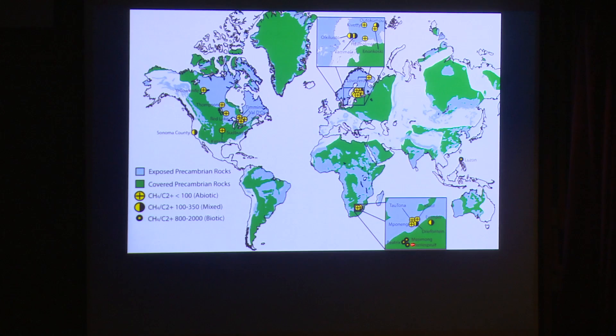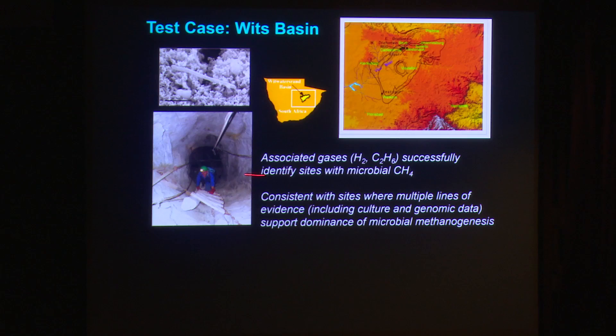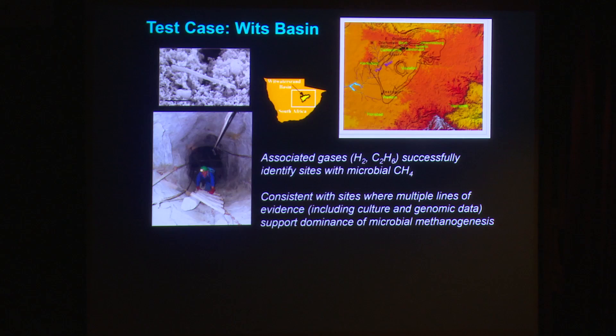In contrast, at Evander, Beatrix, Masimong, and Merriespruit — where hydrogen had disappeared — we see a giant uptick in methane-to-ethane ratio into the order of 1,000. So by measuring just those three gases, we've confirmed that the associated gases could successfully identify sites with microbial methane. This is consistent with our 20 years of contextual evidence — multiple lines including both culture and genomic data supporting the dominance of microbial methanogenesis at those sites. Even with only this information, we could have at least identified the major differences between sites and targeted them for further investigation.